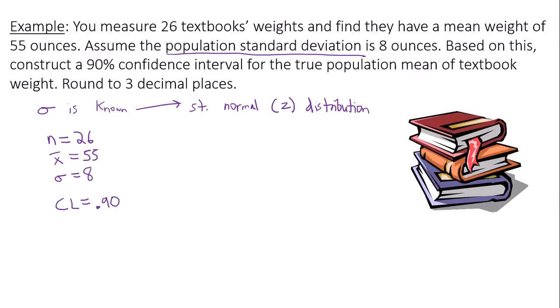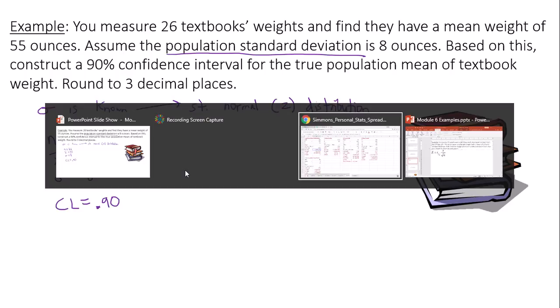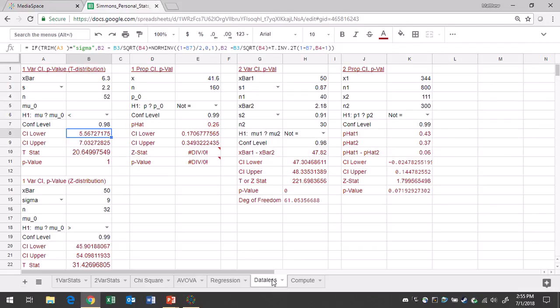This is what I need to put into Google Sheets. I'll go to Google Sheets and make sure you go to the data list tab. I will focus my attention on the one variable confidence level p-value z-distribution section. We're using z because we know sigma, the population standard deviation.